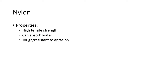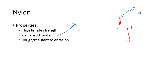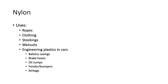Properties of nylon: high tensile strength, can absorb water, tough and resistant to abrasion. The ability to absorb water comes from all those amide groups having the ability to form hydrogen bonds with water molecules. Those water molecules stay attached to the polymer and don't go away, which means they've been absorbed. Uses include ropes, clothing, stockings, and similar products.